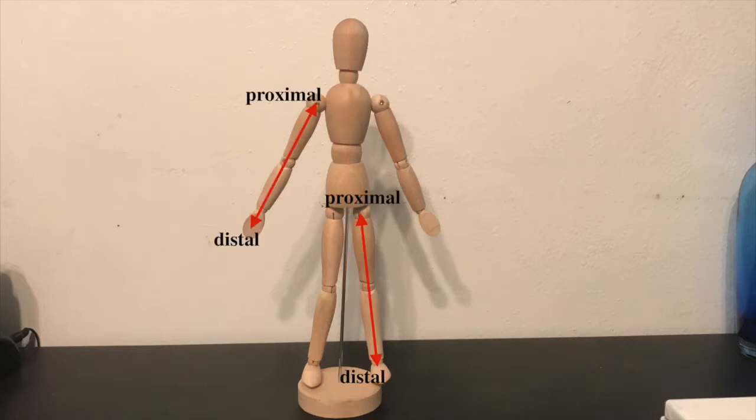The terms proximal and distal are used to describe parts of a feature that are close to or distant from the main mass of the body or trunk, respectively. So the upper arm is proximal and the hand is distal. Similarly, the thigh is proximal and the foot is distal. So intermediate would be between distal and proximal.